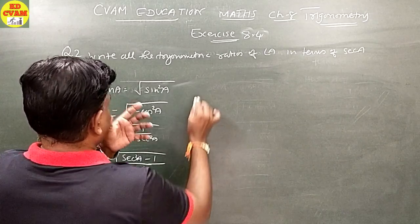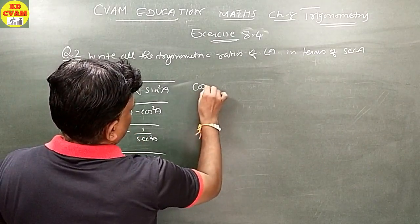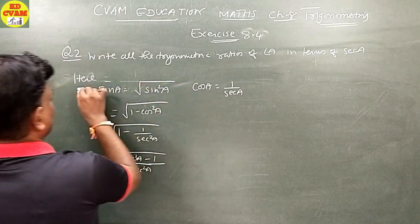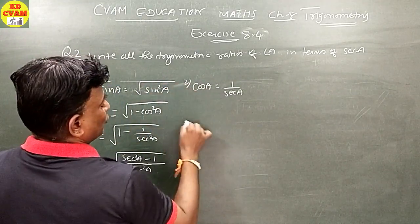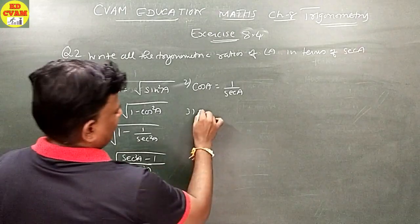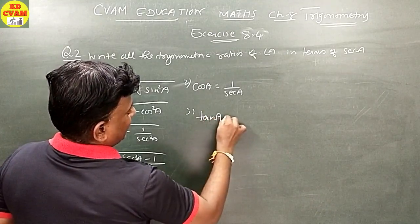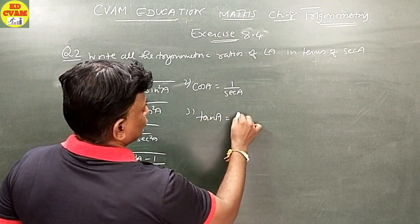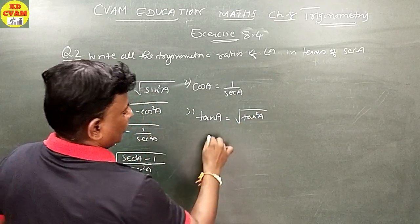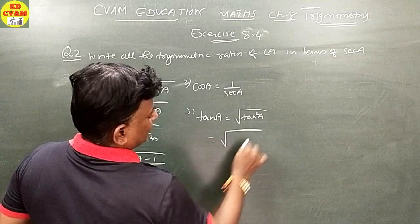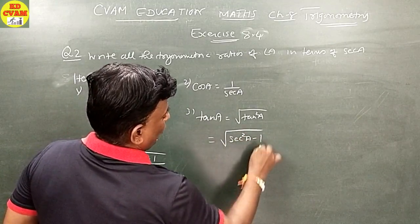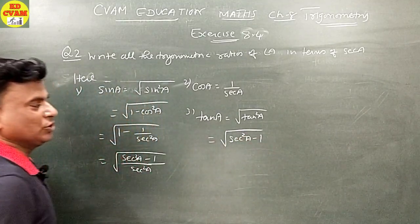Cos A is equal to one upon sec A — that is straightforward. Now for tan A: tan A equals square root of tan squared A, and tan squared A equals sec squared A minus 1. So tan A equals square root of sec squared A minus 1.